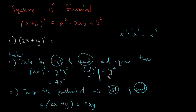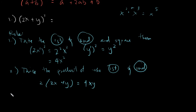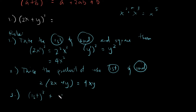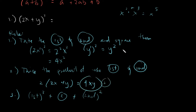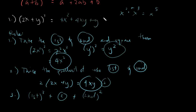You just simply need to structure them by putting them together: your first term squared, plus twice the product, plus your second term squared. Putting them together gives you the answer: 4x squared plus 4xy plus y squared. And that would be the square of your binomial.